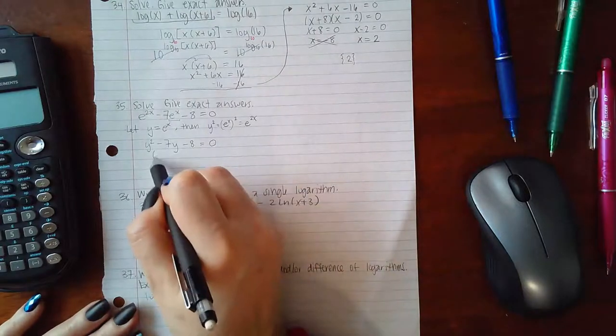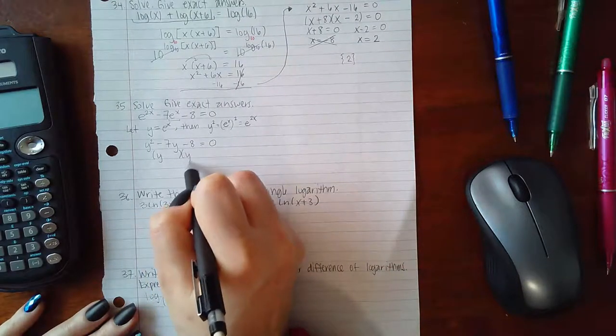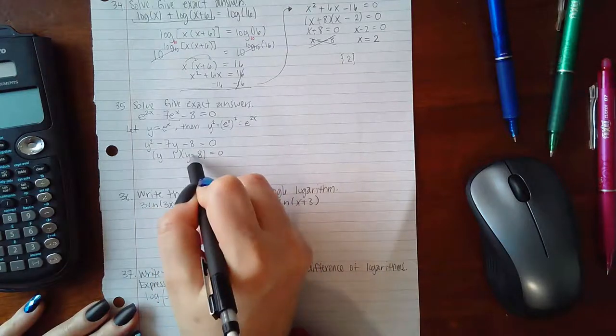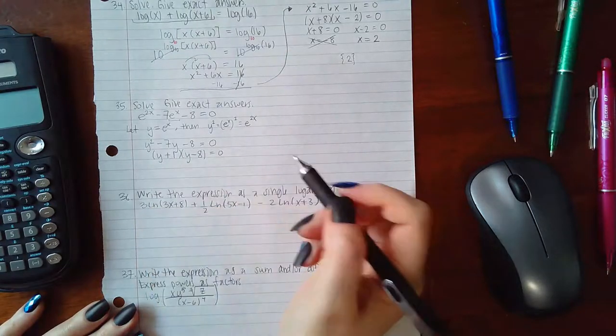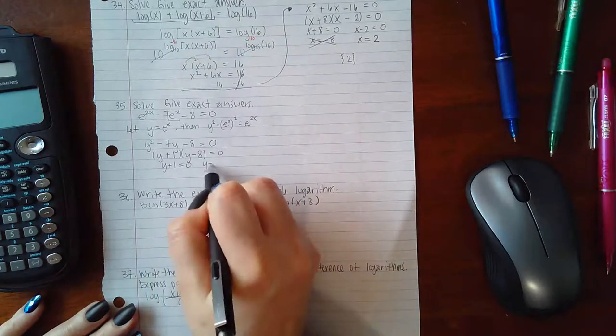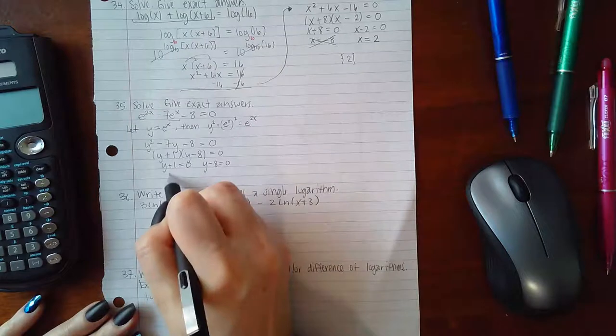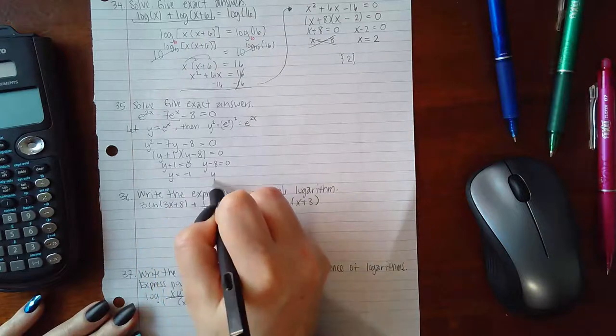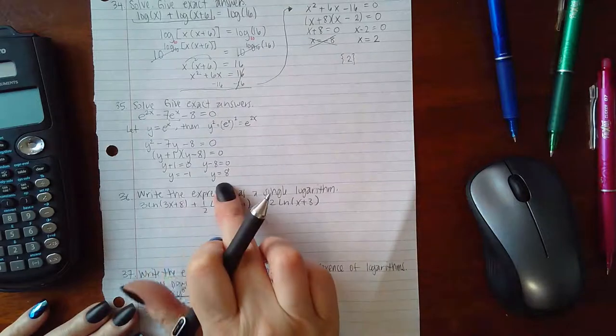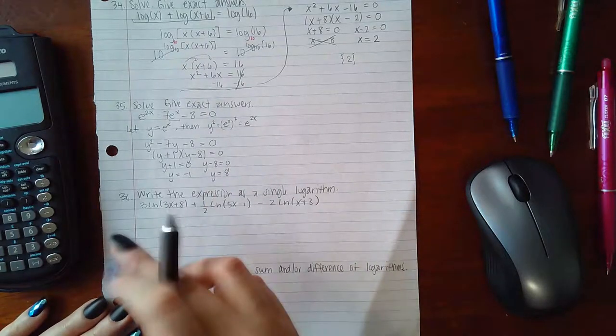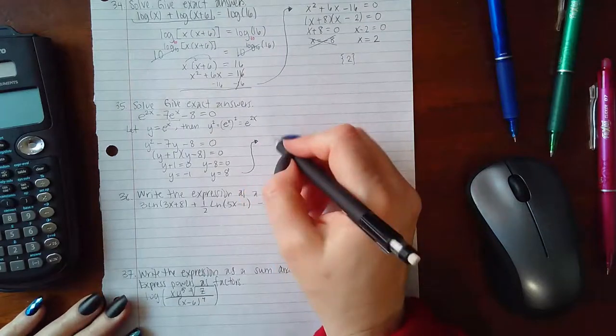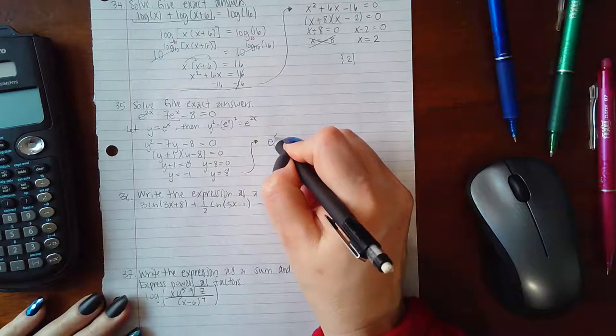Now I can factor this a little bit easier. I will get 1 and 8. If I want negative 7, the 8 will have to be negative. So if I set each factor equal to 0, I get y equals negative 1 and y equals positive 8. But we were not asked to solve for y. We have to go back and back substitute what y represented. Y represented e to the x.